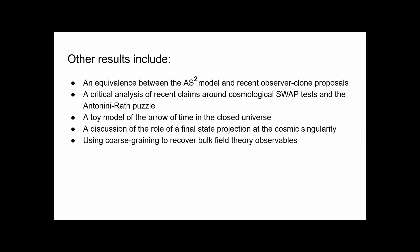Our other results include a demonstration of the equivalence between the AS-squared model and more recent observer clone proposals, including a discussion of the role of decoherence and pointer states, a critical analysis of recent claims around cosmological swap tests and the Antonini-Rath puzzle, a toy model of the arrow of time in the closed universe, a discussion of the role of the final state projection at the cosmic singularity, and a demonstration that quantum field theory in curved spacetime can be recovered via coarse graining. And there is much more in the paper.